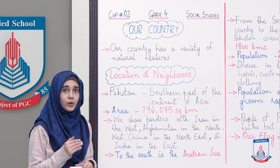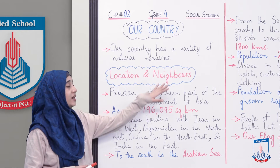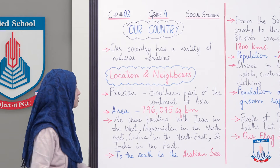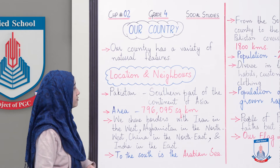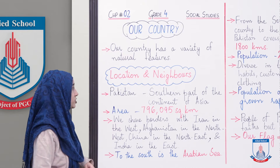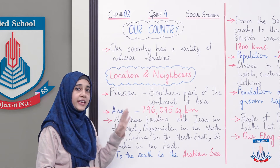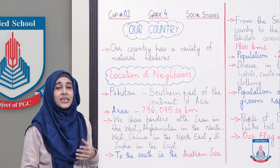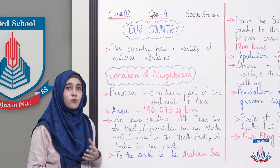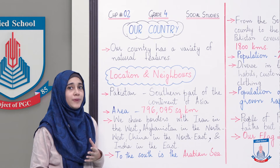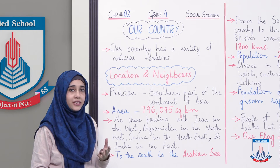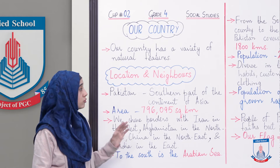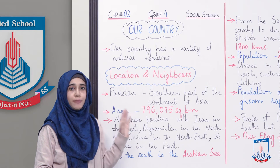Ab hum baat kar letey hain thodi bahut apni location ki, yaani ke hum kis jagah par hain world map mein, and then our neighbors, yaani ke humaare mulk ke humsaaye kaun hain. Toh sabse pehle: southern part of the continent of Asia — yaani ke Pakistan hai kis jagah par. Pehli baat jo aap ne samajhni hai woh yeh hai ke hum Asian continent mein hain. Asia ek barr-e-azam hai aur is ke southern part mein Pakistan hai.